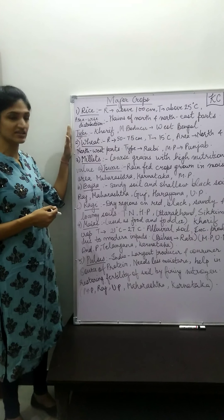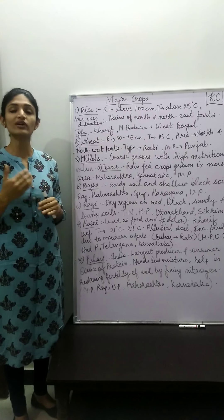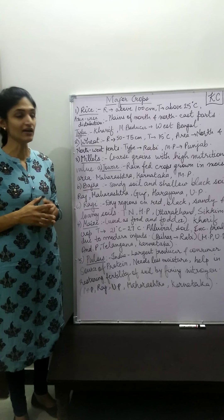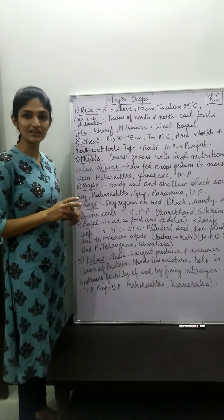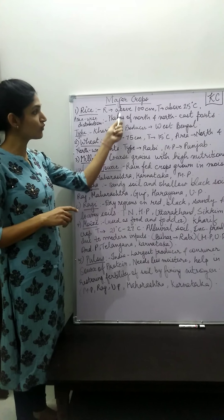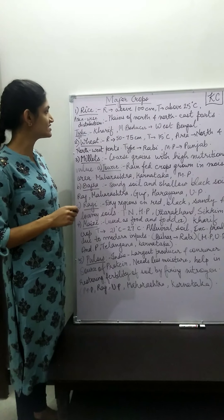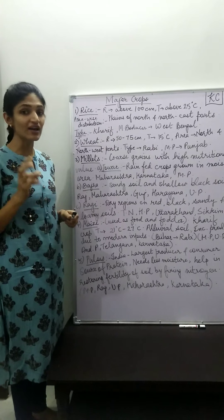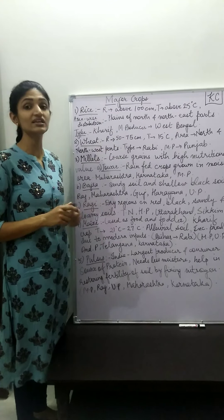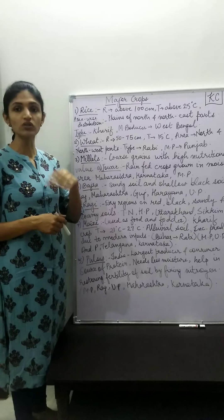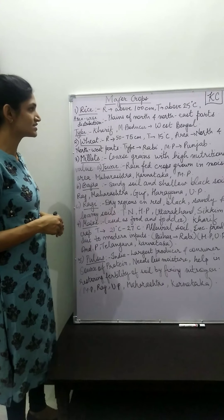First we will start with rice. We will discuss each crop's different geographical and climatic conditions. Rice requires rainfall of above 100 cm, so we need very good rain. Temperature is about 25 degrees Celsius. Areas where rice cultivation takes place are the plain areas of the north and north-eastern parts of India.